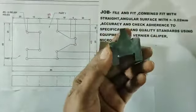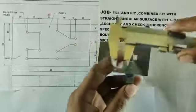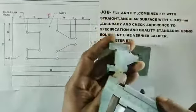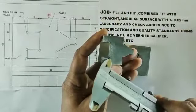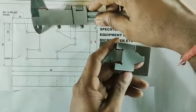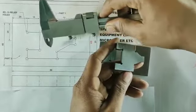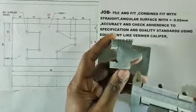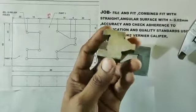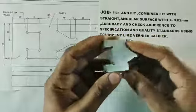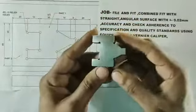Part number one job की मुटाई को 11 mm में finish करते हैं और इसमें 3 mm diameter का 4 relief hole — 1, 2, 3, 4 — drill machine की साहिता से drill करके complete करते हैं. इस परकार हमारा part number one job drawing के अनुसार पूर्ण रूप से complete होता है.